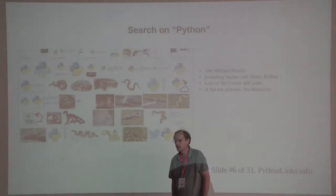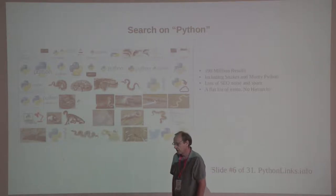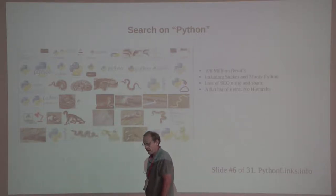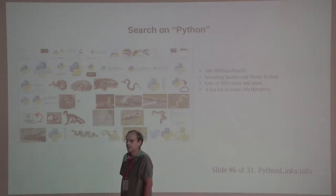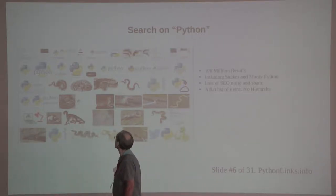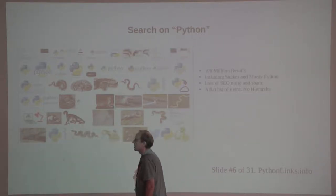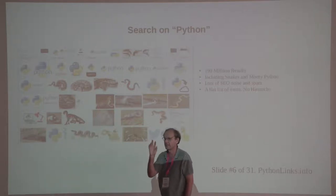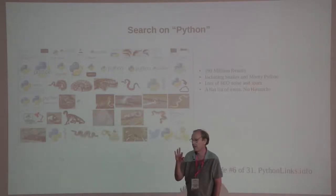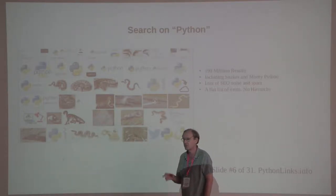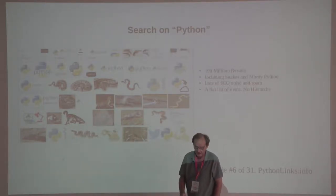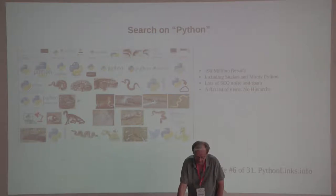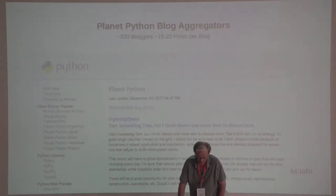The problem is if you search on Google for Python, you end up getting about 190 million results, and it's just a single flat list with Monty Python and snakes mixed in. It's just way too much — there needs to be some organization.